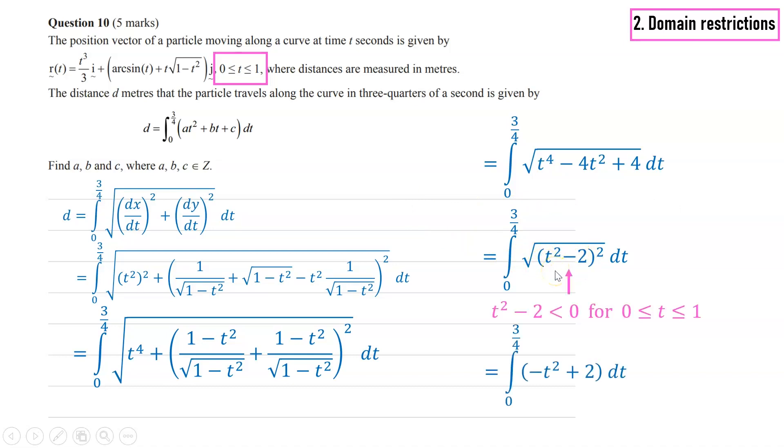So when we square that and square root it, we've actually reversed the sign of that negative. So what the expression should be is negative t² plus 2. And that's going to give our answer. But yeah, quite tricky there. So watch out for those domain restrictions, especially if you're aiming for those really high marks.